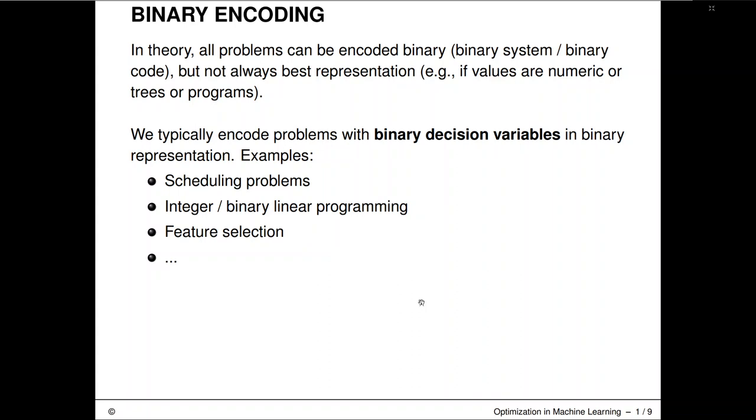We usually encode problems that have binary decision variables as a binary representation. An example might, for example, be linear programming. We've discussed this before where the LP, the linear program featured a d-dimensional input vector of real values. Sometimes you look at or there are variations of these linear programs where you only look at integer features or even only binary features.